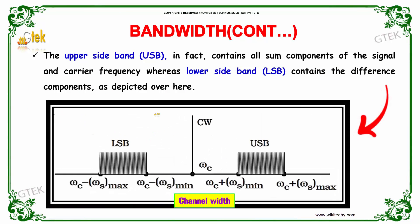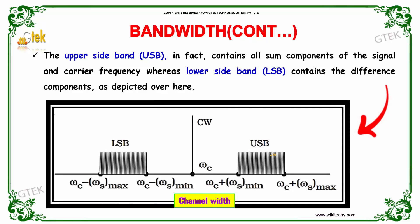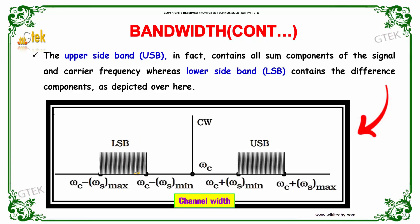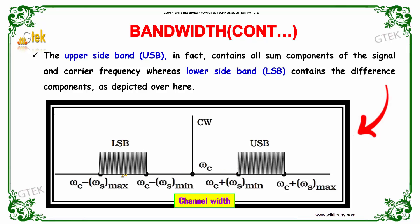The upper sideband in fact contains all sum components of the signal and carrier frequency, whereas the lower sideband contains the difference components as depicted here. You are able to see it is minus here and here it is added, so plus here.